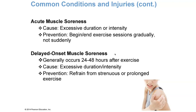Delayed onset muscle soreness generally occurs 24 to 48 hours after exercise and is also very common. The worst thing people can do is say they hurt too bad to do anything — you need to get up and continue moving because that's what will help get that muscle soreness out. The cause is again excessive duration or intensity. Prevention includes refraining from strenuous exercise, following the ten percent rule, and building up gradually.